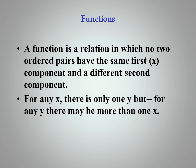Now we have to say that a function needs to be a relationship in which no two ordered pairs have the same first component and a different second component. For any X, there's only one Y. But for any Y, there may be more than one X.